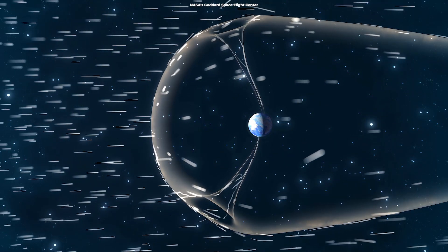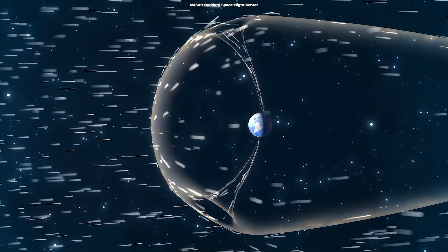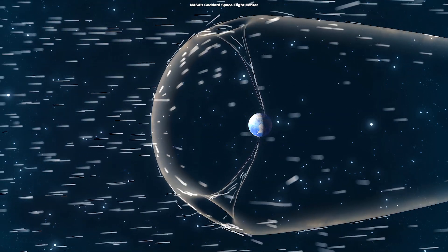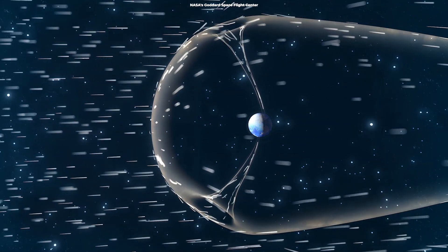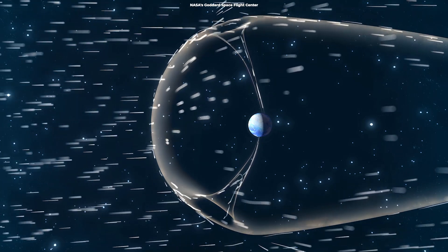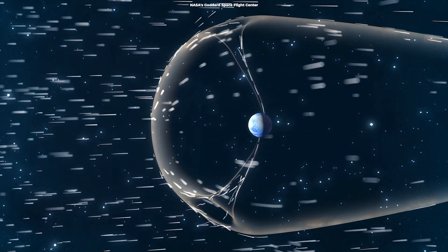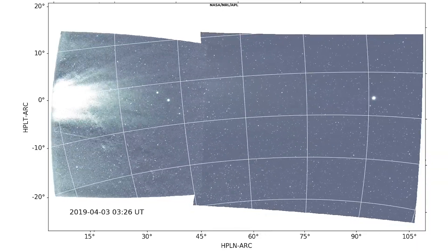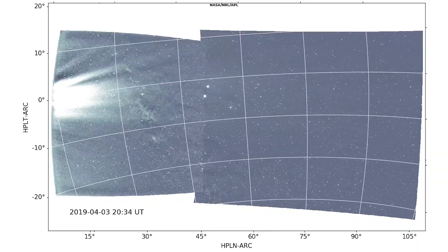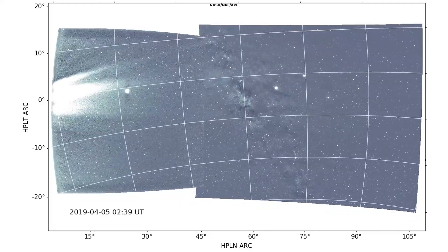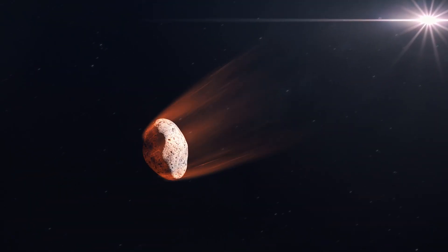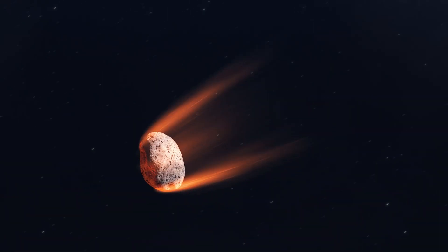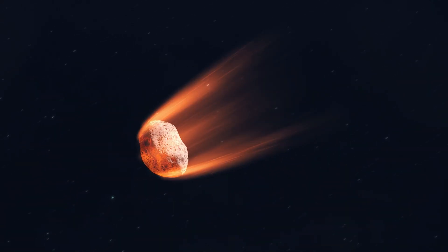According to a team of international researchers led by the University of Glasgow, including researchers from Curtin's Space Science and Technology Center, the solar wind played a role in forming water. The solar wind, which is made up of charged particles from the Sun that are mostly hydrogen ions, created water on the surface of dust grains carried on asteroids that smashed into the Earth during the solar system's early days.